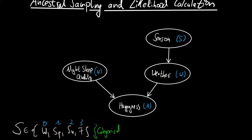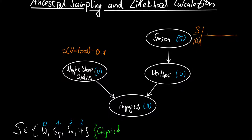Let's start with the night sleep quality. We need the probability of the night sleep quality being good, and let's say for simplicity that this is 0.8. Then for the season, we need the probability of each particular season. Let's say they are equally likely, so each of them is 25%.